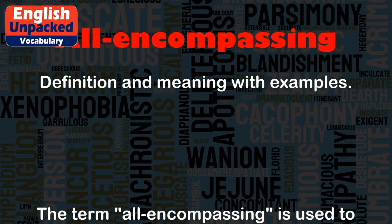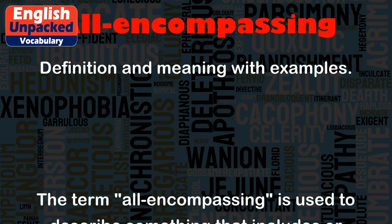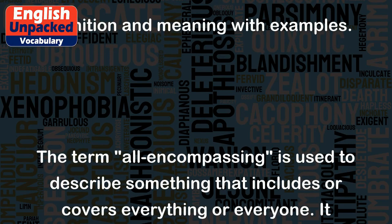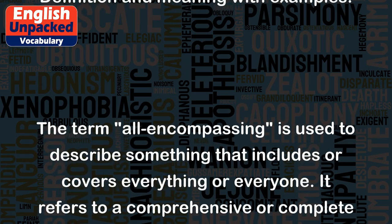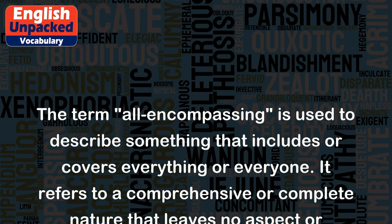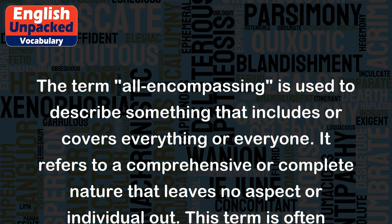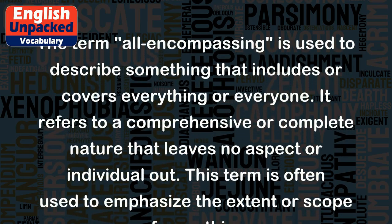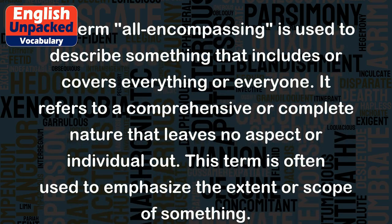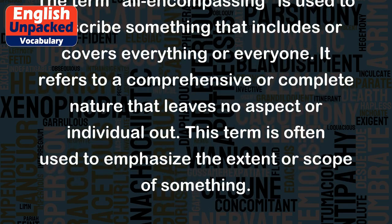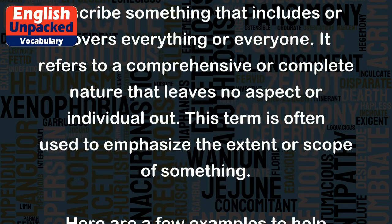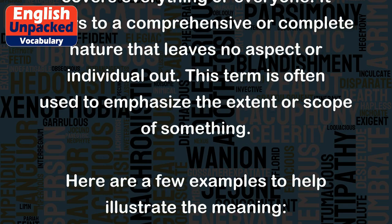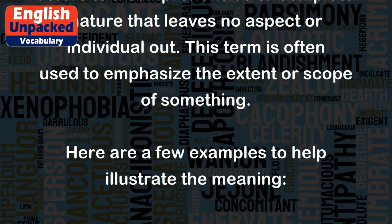All-encompassing. The term all-encompassing is used to describe something that includes or covers everything or everyone. It refers to a comprehensive or complete nature that leaves no aspect or individual out. This term is often used to emphasize the extent or scope of something.